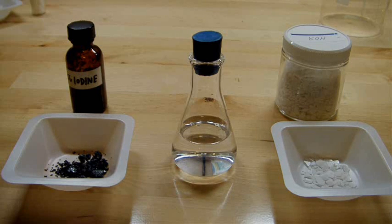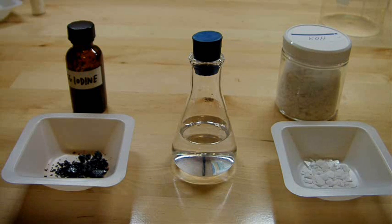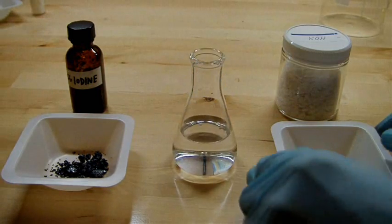On the left here I have 5 grams of iodine and on the right is 2.2 grams of potassium hydroxide, the stoichiometrically equivalent amounts. So the first thing I'm going to do is dissolve the potassium hydroxide into solution.